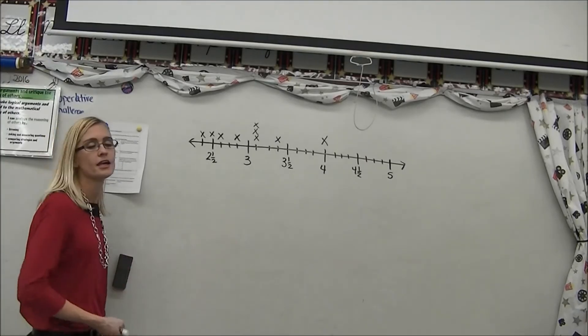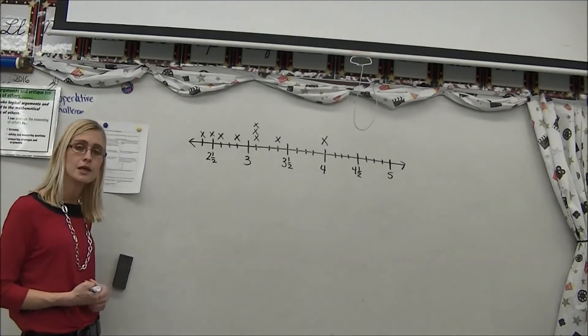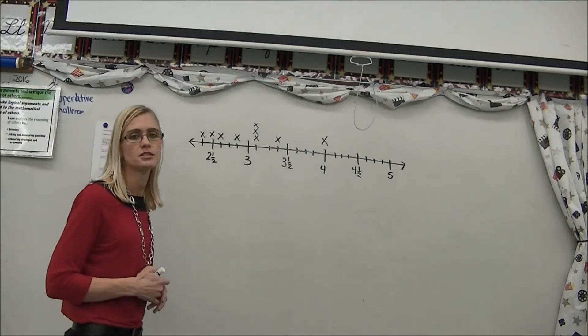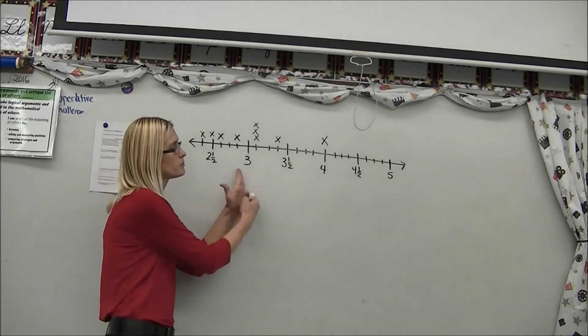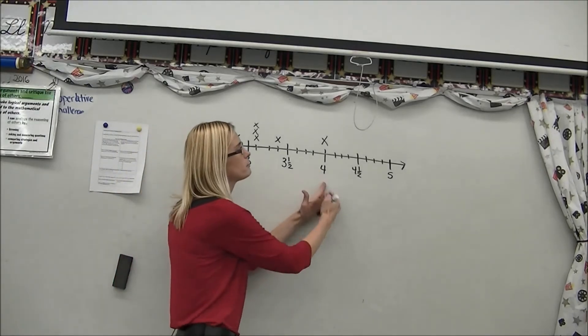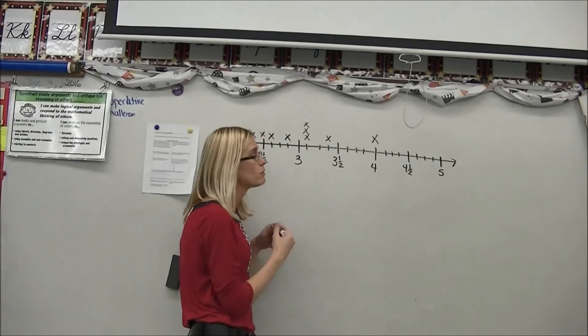We're going to be looking at this number line to answer our questions, but before we begin, we need to see what our number line is divided into. So what I'm going to do is count my intervals from one whole to the next whole, either between 3 and 4 or between 4 and 5. So between 3 and 4...